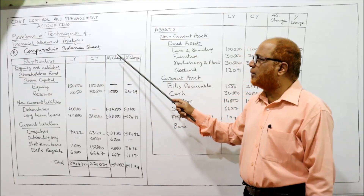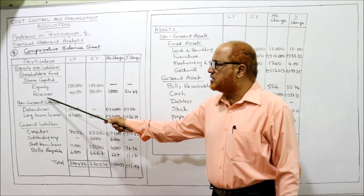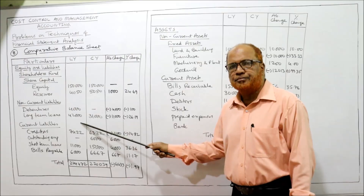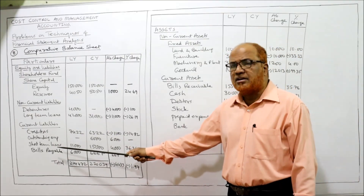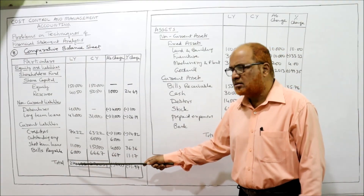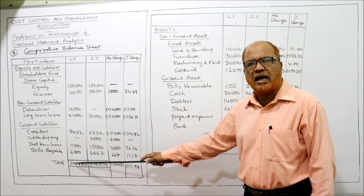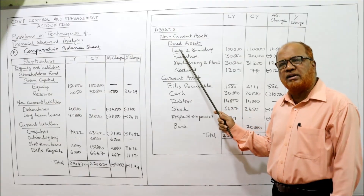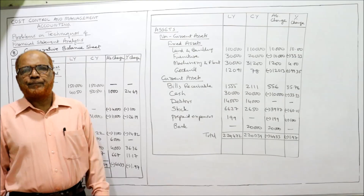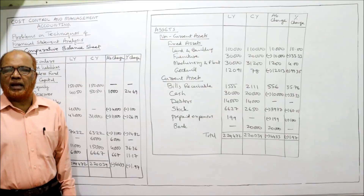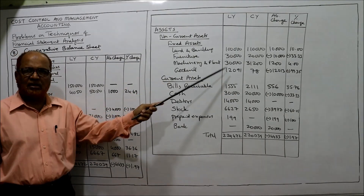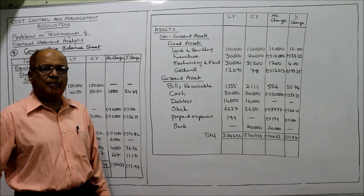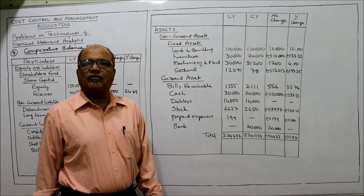We first fill up the data in the last year and current year columns, then complete the absolute change and percentage change columns. Equity and reserves are taken as given in the problem. Non-current liabilities: debentures and long-term loans. Current liabilities: four items — bills payable, creditors, outstanding expenses, and short-term loans. The totals of the liability side for last year and current year are calculated. On the asset side, non-current assets include fixed assets: land, building, furniture, machinery, plant, and goodwill.